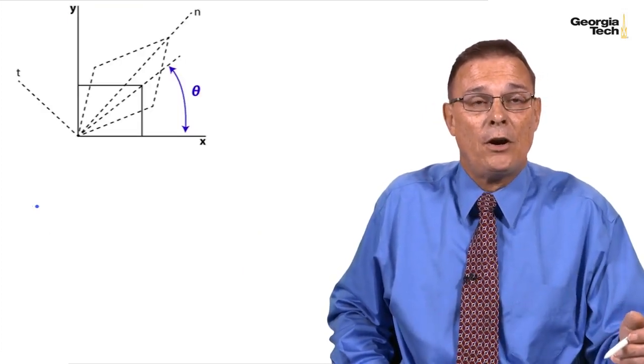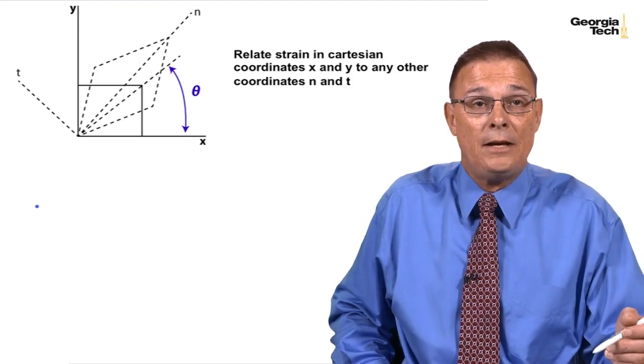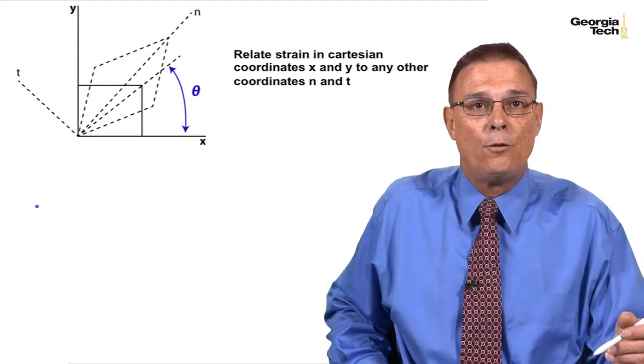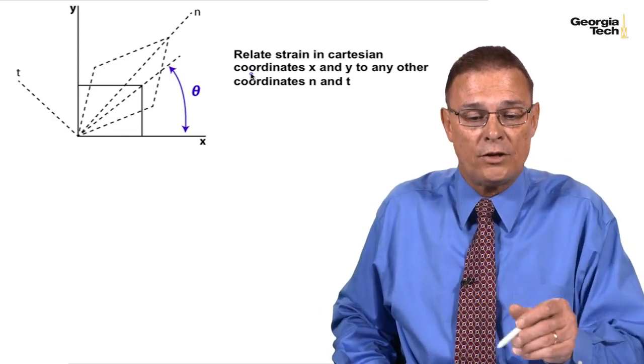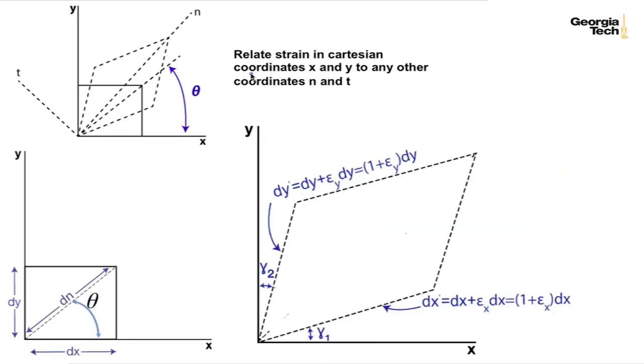So here is our block in the, our parallel piped in the deformed position. We want to relate the strain in the x and y coordinates to any coordinates n and t. And so here's our unrestrained parallel piped. Here it is after it's been deformed.